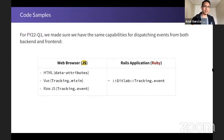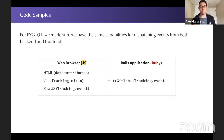Let's look at some code samples. We've made sure we have the same capabilities for dispatching events from both backend and frontend. In the web browser or JavaScript, we have a few APIs: we can declare events using data attributes, which is common in HTML or Haml templates and view templates. For custom events, we have access to the tracking mixin for Vue. For raw JavaScript, we can use the event method of the tracking class directly. For the Rails application, we have the tracking event method as well.